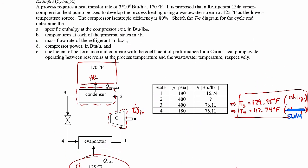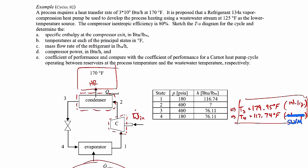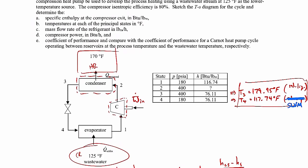That covers everything required for this problem. The units are a challenge, but the conceptual steps for solving the problem are hopefully straightforward. The one thing that might have been tricky is finding the Carnot heat pump COP — just remember it's the ideal best-possible performance, depending only on the reservoir temperatures.